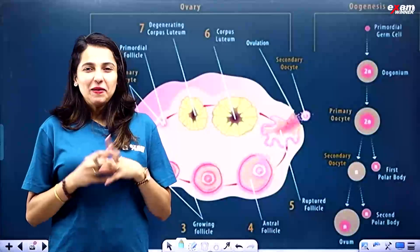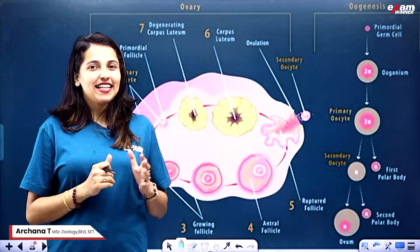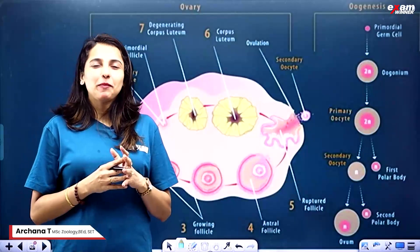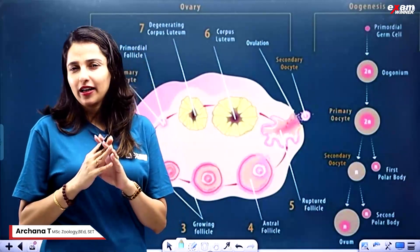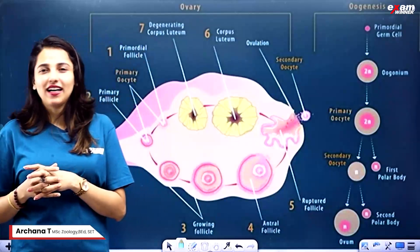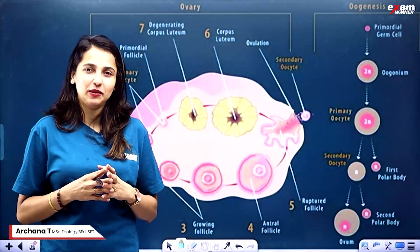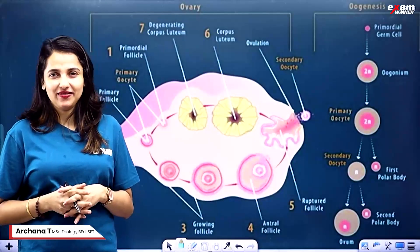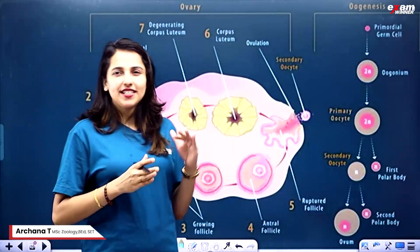Hello guys! This is the second chapter of Human Reproduction. There are very important topics in Human Reproduction. One important topic is Gametogenesis — the formation of gametes.